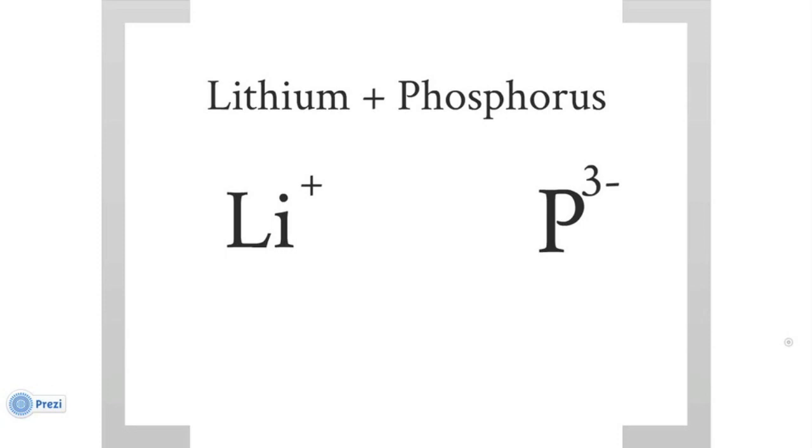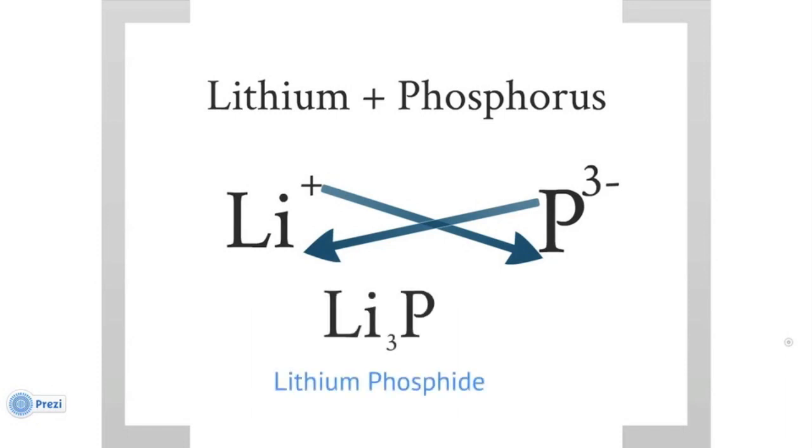Lithium and phosphorus, all we have to do is cross the charges, and we get Li3P, lithium phosphide.